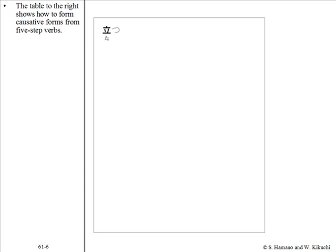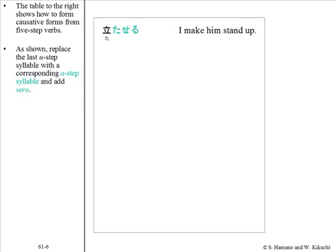The table to the right shows how to form causative forms from five-step verbs. As shown, replace the last U-step syllable with the corresponding A-step syllable and add せる. For example: 立つ becomes 立たせる, 作る becomes 作らせる, 使う becomes 使わせる.